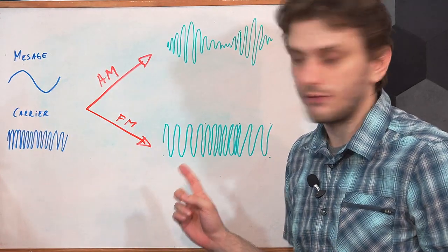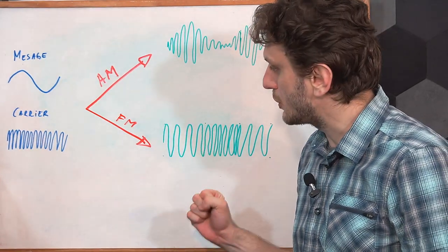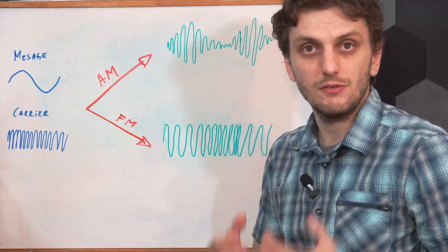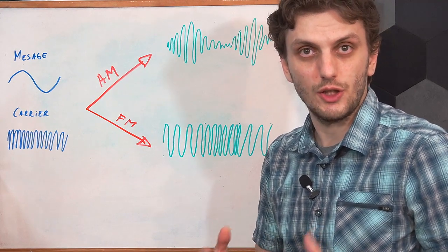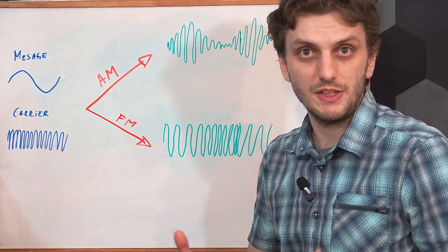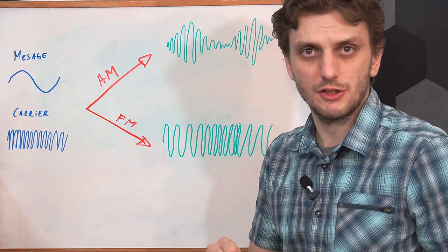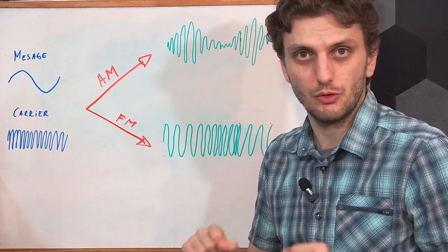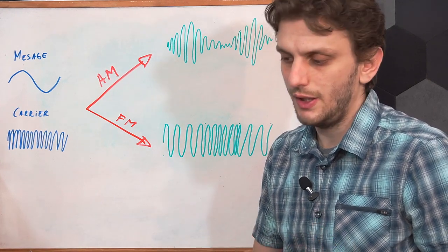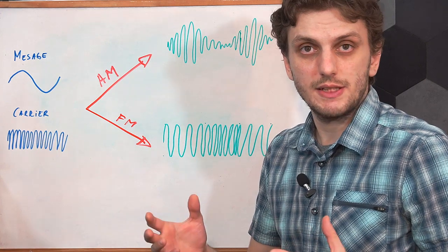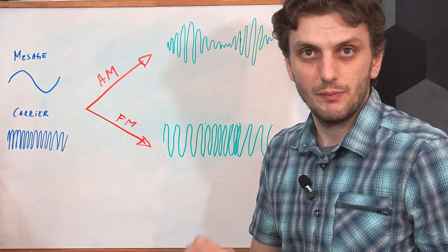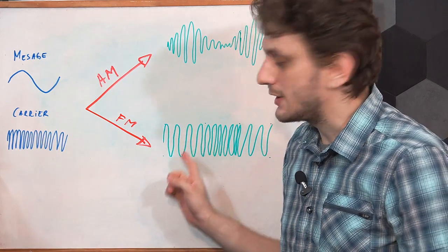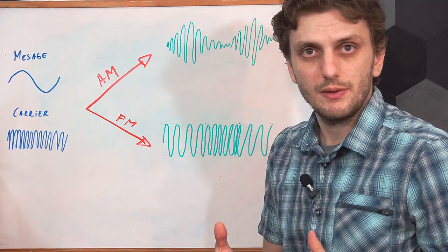Now generating this sort of frequency modulated signal can be easily achieved by using a voltage controlled oscillator, or VCO. This is a circuit that I covered in a previous video, so I won't be going into too many details other than saying that it's not that difficult of a process. So obtaining frequency modulated signals is not so complicated.